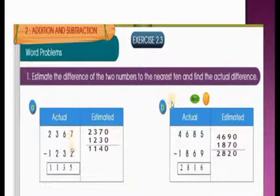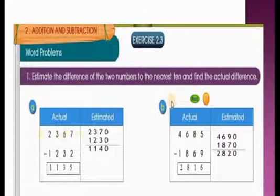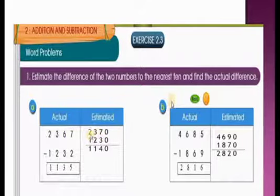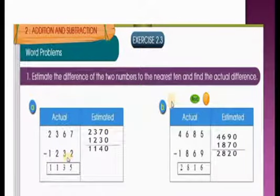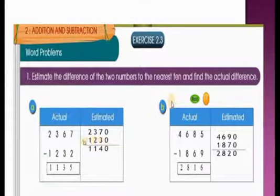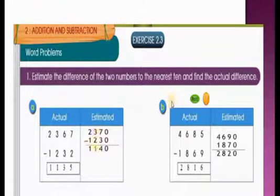Now we have to estimate the difference to the nearest 10. Is 67 nearest to 60 or 70 children? Yes, it is nearest to 70. So we write 2,370. Is 32 nearest to 30 or 40? Yes, it is nearest to 30, so 1,230. Finding the difference: 0 minus 0 is 0; 7 minus 3 is 4; 3 minus 2 is 1; 2 minus 1 is 1. The estimated difference is 1,140.